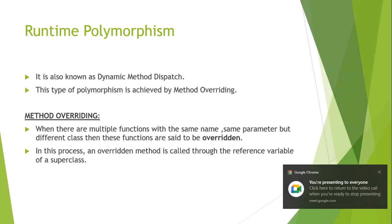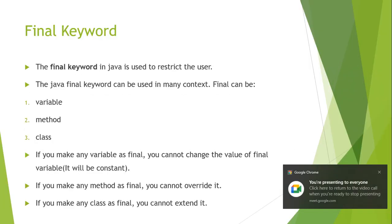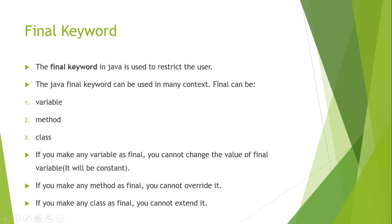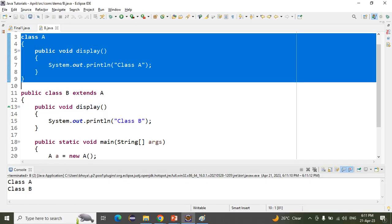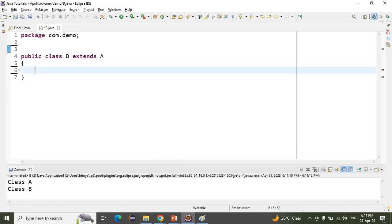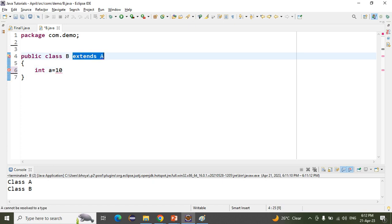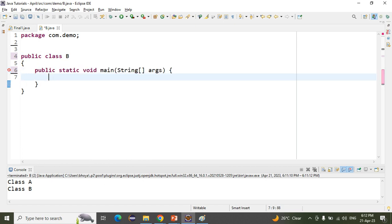Now we will see another topic: the final keyword in Java. The final keyword is used to restrict the user. It can be used in many contexts: with variables, methods, and classes. For example, suppose I write 'int a = 10' inside the main method and then print it.